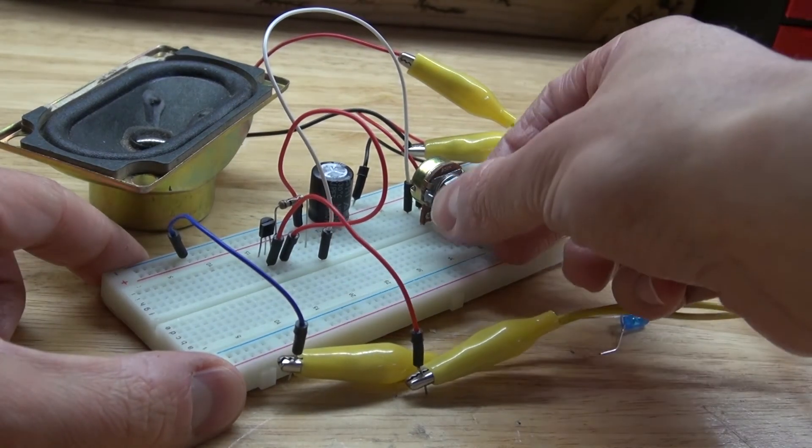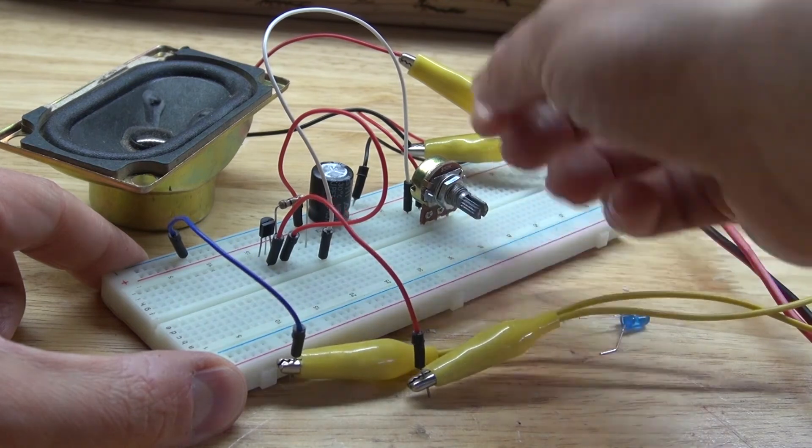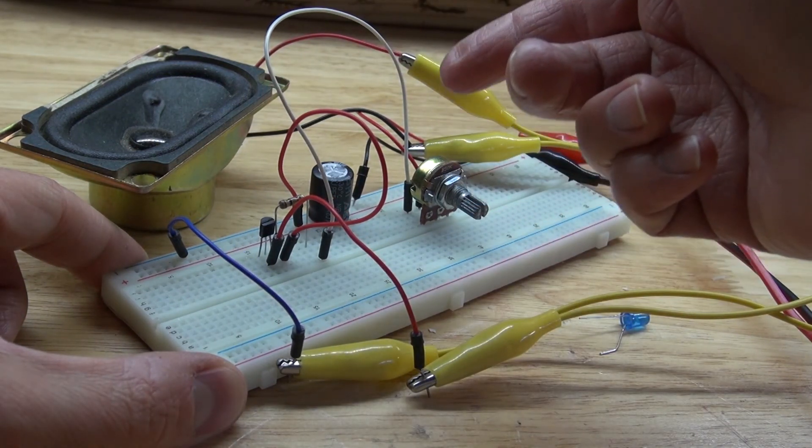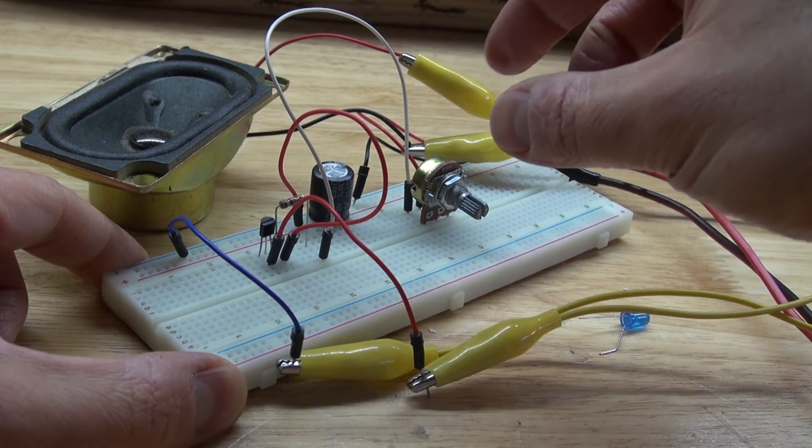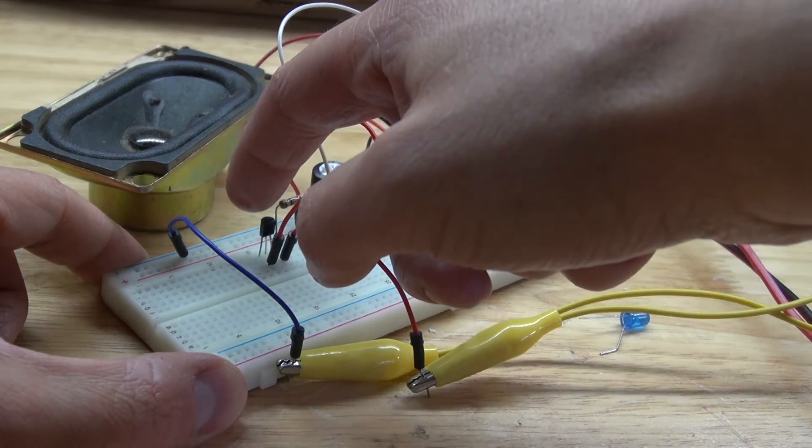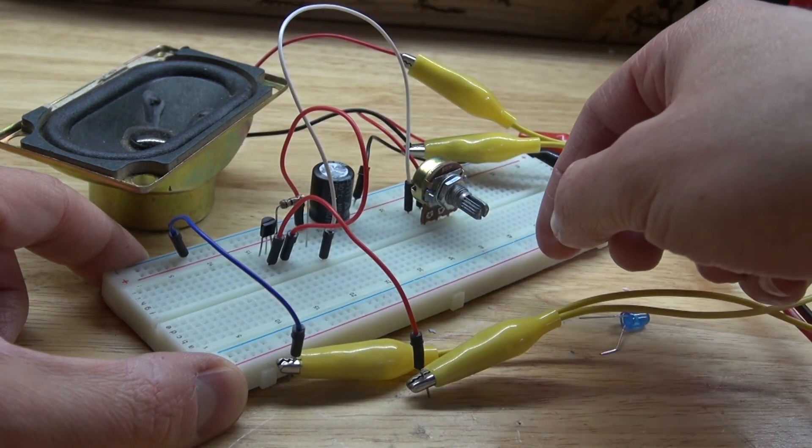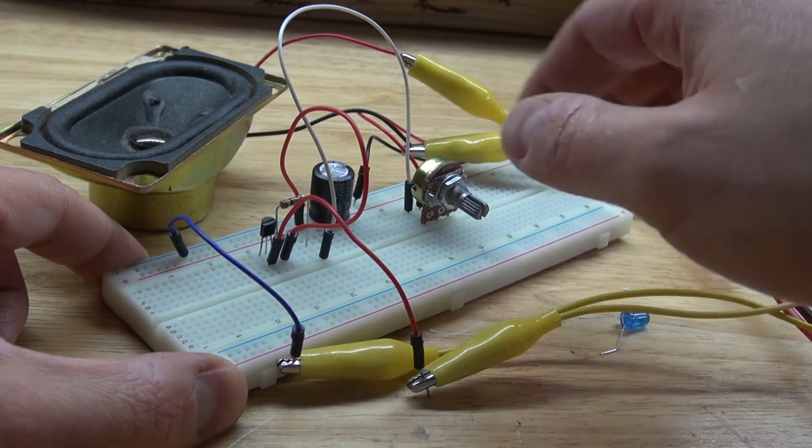So now seeing the LED flash and hearing the clicking, it's not acting like what you can hear from a 555 timer making square waves. If I'm correct, I'm assuming this is making a sawtooth wave signal. I'm not really sure.